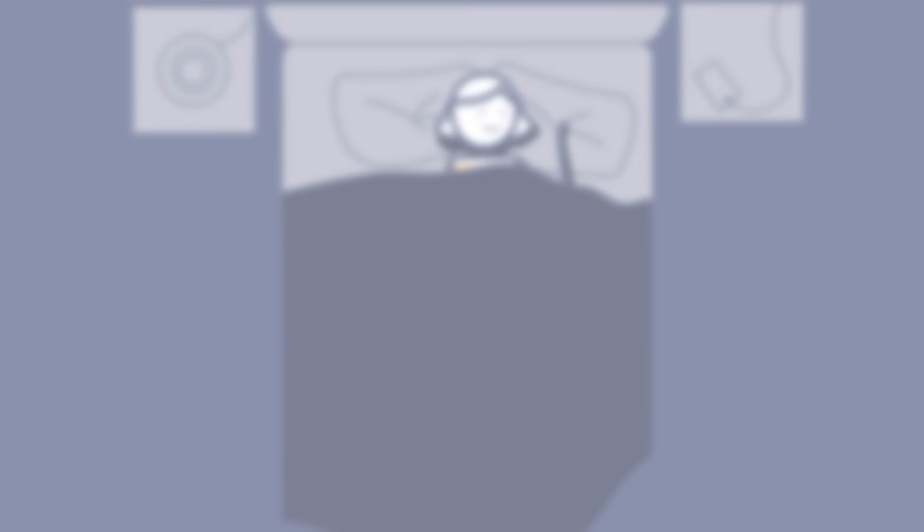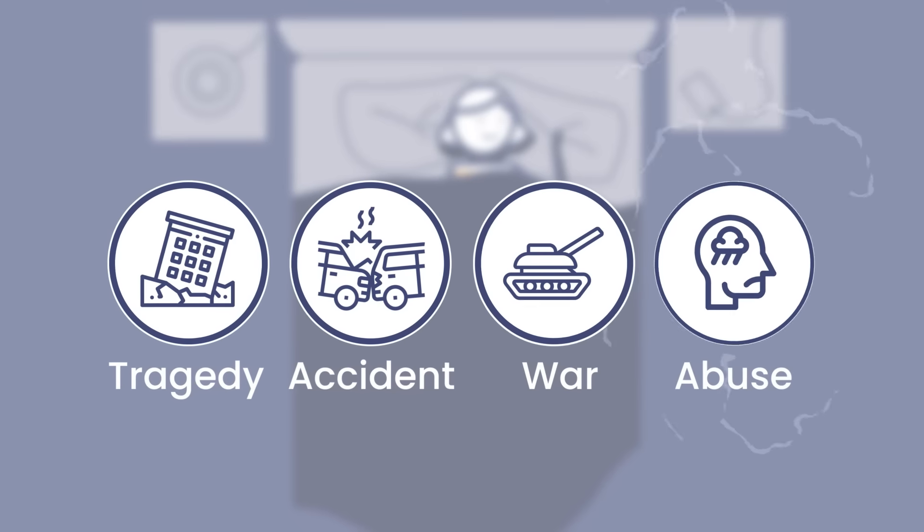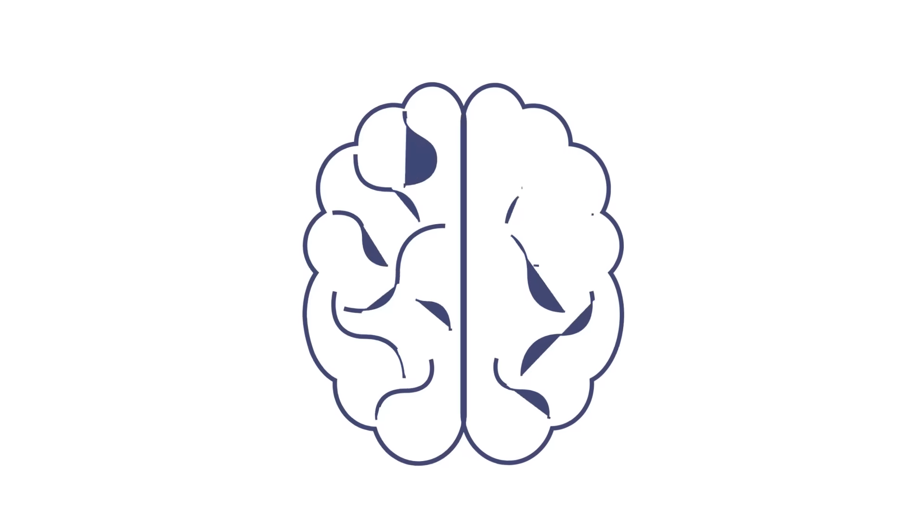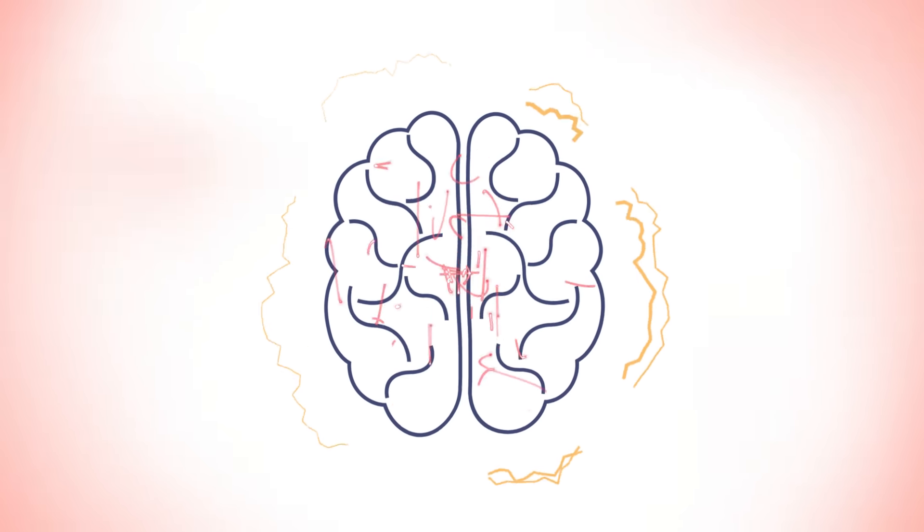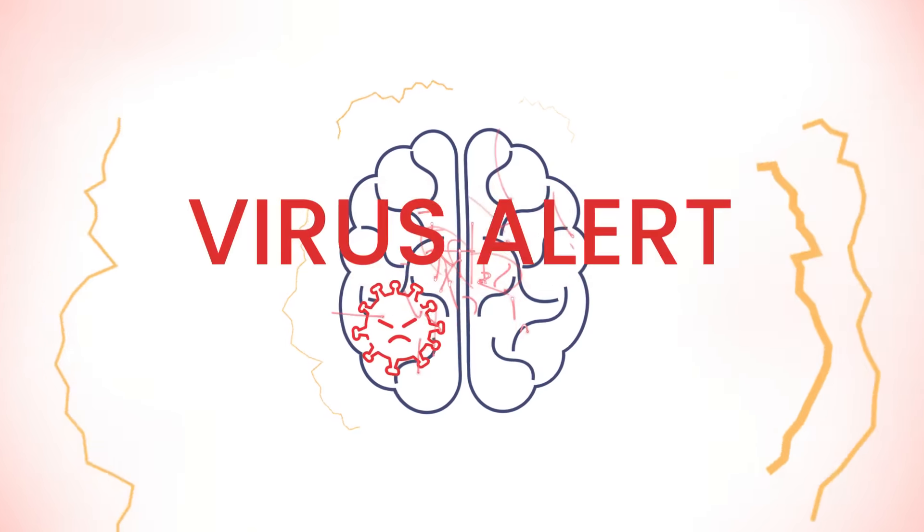But say a traumatic event occurs. This can be a tragedy, accident, war, or abuse. The sudden stress causes your brain to freeze. Now it can't process memories normally. It's like a virus has entered your brain, and is causing it to glitch.